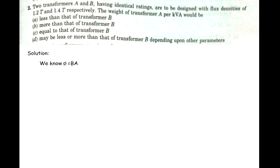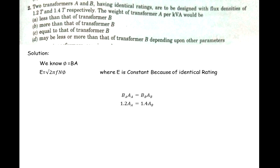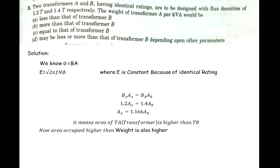We know that flux φ = B·A, and EMF E = √2·π·f·N·φ. Since E is constant due to identical ratings, we get B_A·A_A = B_B·A_B. After putting in the flux density values, the area of transformer A is greater — about 16.6% more than transformer B. Since the area is higher, the weight is also higher. Therefore, the weight of transformer A per KVA would be more than that of transformer B, so Option B is correct.